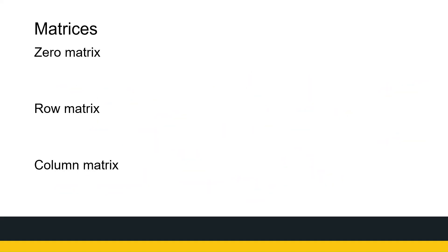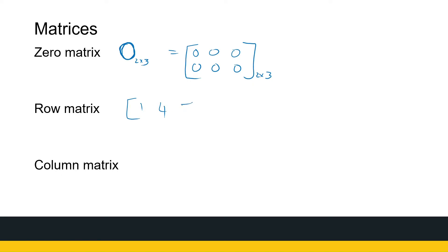Some other types of matrices are quite well named, so they're not complicated. The zero matrix has zeroes everywhere. We often write a bold zero, but to indicate it's a matrix we sometimes write the size, like '2 by 3', so a two-by-three zero matrix is just full of zeros. A row matrix is a matrix that has only one row — for example, 1, 4, 5 is a 1-by-3 row matrix. A column matrix has only one column — for example, -1, 2, 7, 10 is a column matrix.